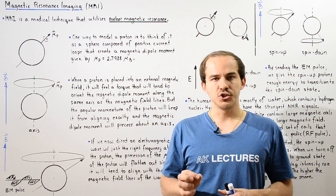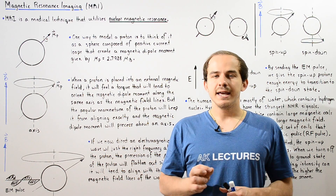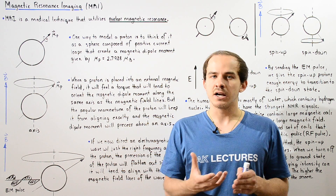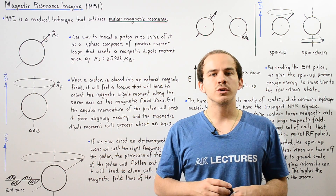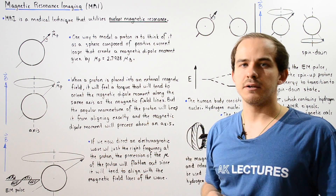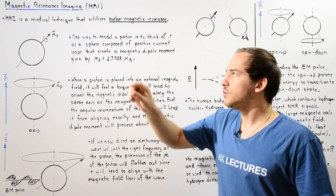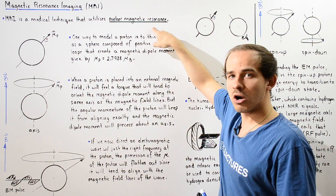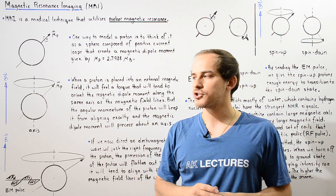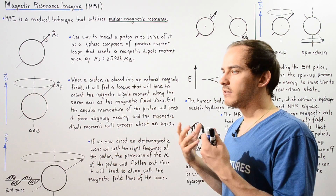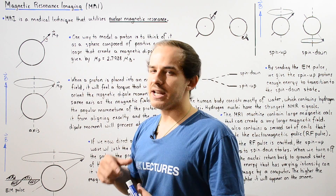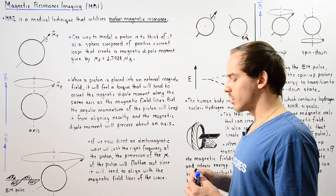Magnetic Resonance Imaging, or simply MRI, is a technique commonly used in medicine. It comes from the field of nuclear physics and uses a concept known as nuclear magnetic resonance. If you don't know what NMR is, go back and watch my lecture on NMR. In that lecture, we build a foundation needed to understand how magnetic resonance imaging actually works.